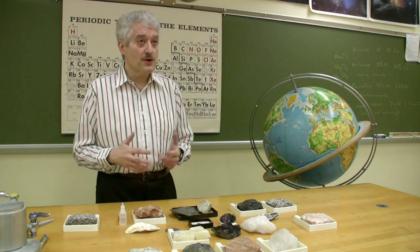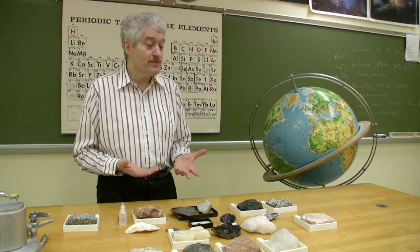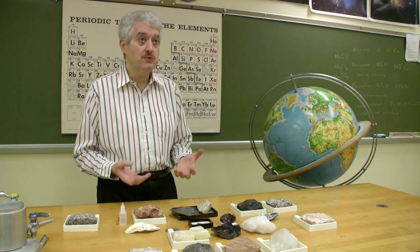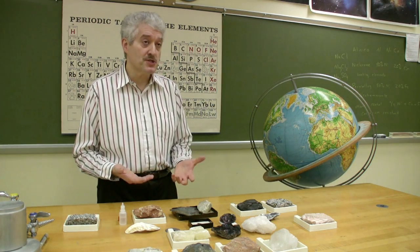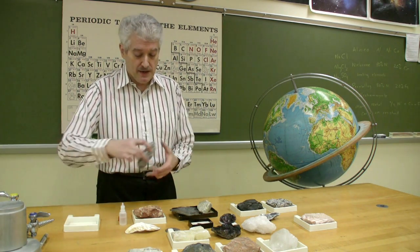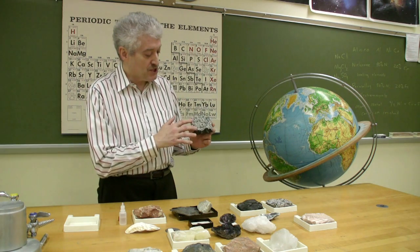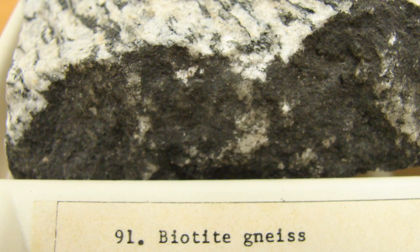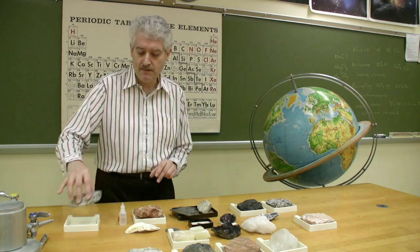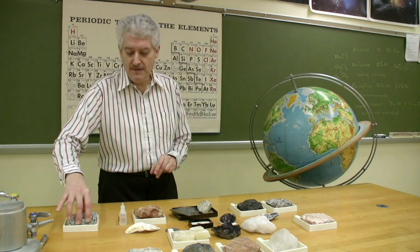The third type of rock is called metamorphic. Metamorphism means change, which is usually the result of heat and pressure. This example, which is called gneiss, has experienced pressure, and that has caused the minerals in it to align in a certain way.